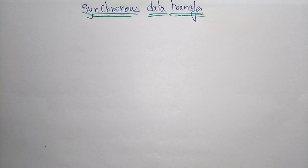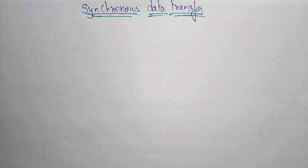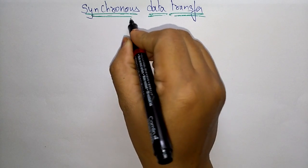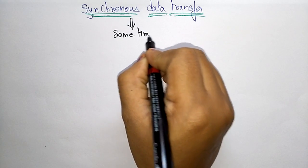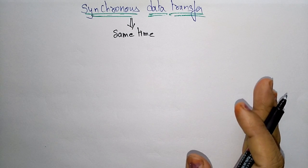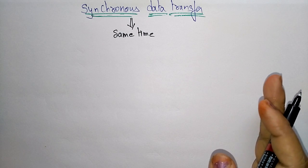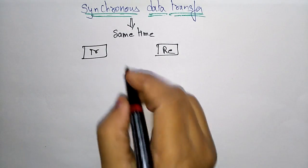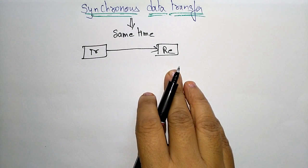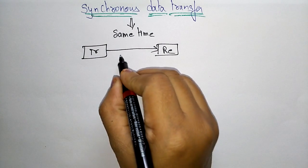Hi students. Coming to the next topic, that is synchronous data transfer. We know that data is transferred in the computer in the form of synchronous or asynchronous. Data transfer from transmitter to receiver or receiver to transmitter can happen in a synchronous or asynchronous way. Synchronous data transfer means at the same time the data will be transferred from transmitter to receiver, and the devices are synchronized with the same clock pulse.